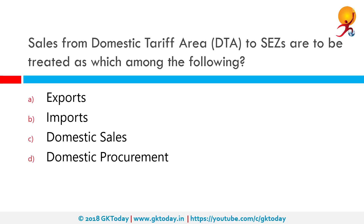Sales from domestic tariff area or DTA to SEZs are to be treated as which among the following? Domestic tariff areas mean an area within India that is outside the special economic zones or SEZs. So any area which is not under the jurisdiction of a custom bonded area is called a domestic tariff area. In both cases, the sales are exports.